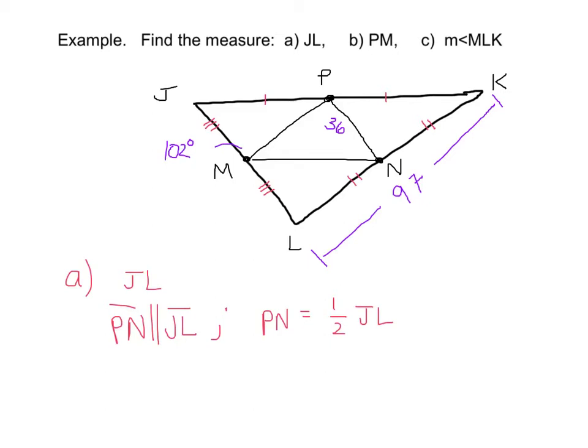Well, don't we know the length of PN, which is 36? So we can say 36 is equal to one-half of JL. And then we can just multiply by 2 to see that the length of JL is equal to 72. And now we are done with part A.